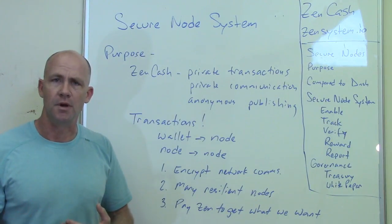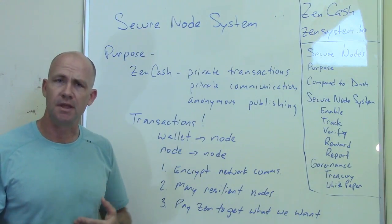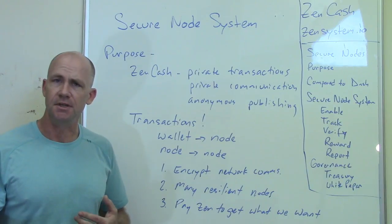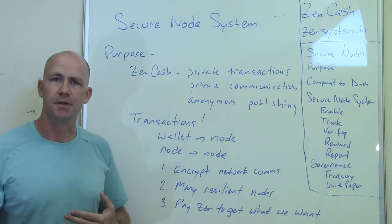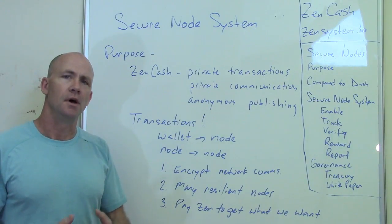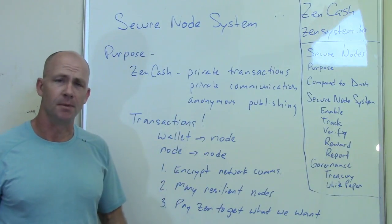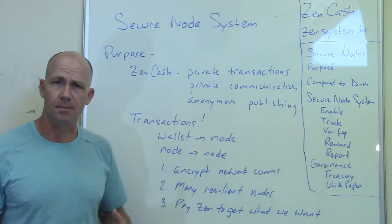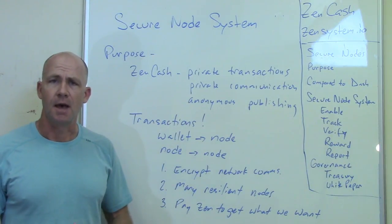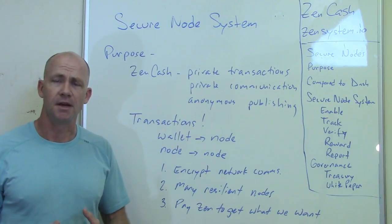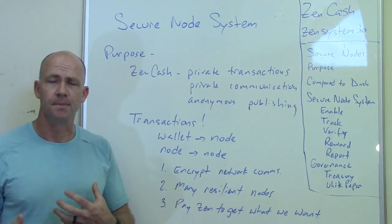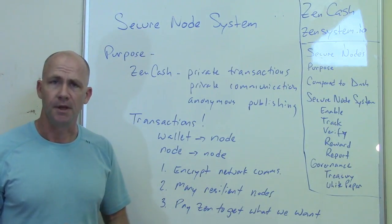When we're able to do one-to-many private communications within the memo field of the shielded transactions, we'll be able to put a URL to allow for anonymous publishing to, for example, IPFS — Interplanetary File System — or something like that.